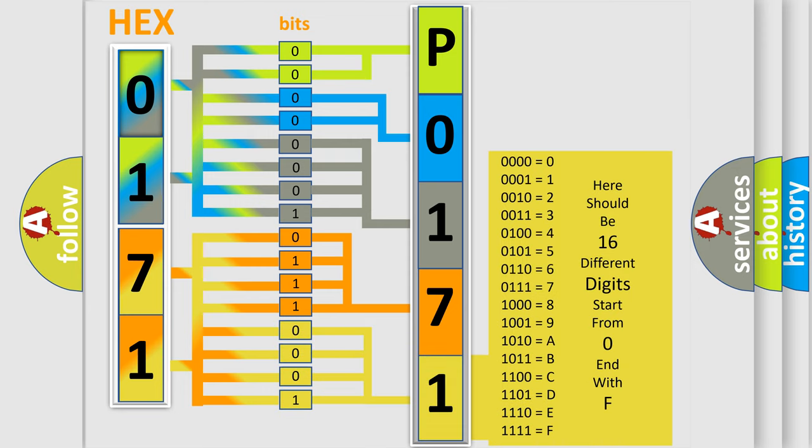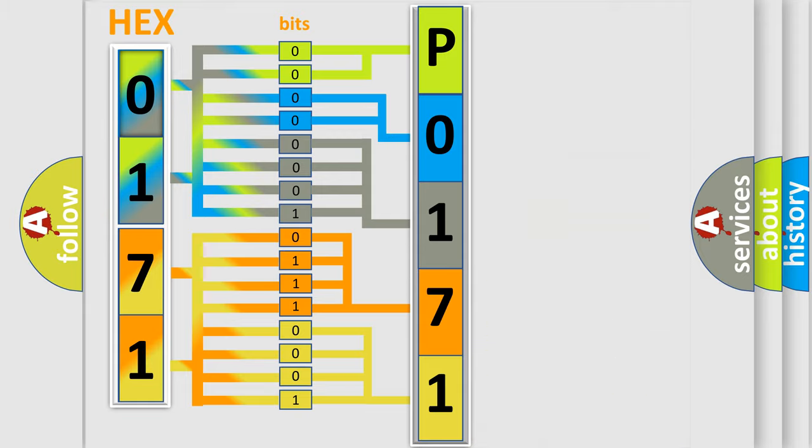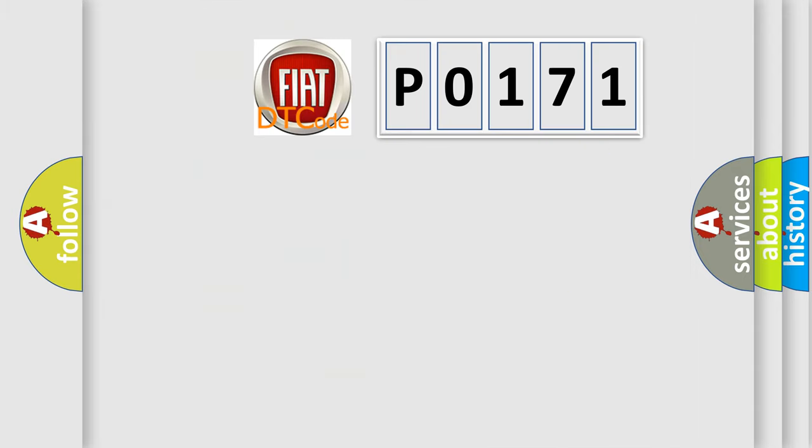We now know in what way the diagnostic tool translates the received information into a more comprehensible format. The number itself does not make sense to us if we cannot assign information about what it actually expresses. So, what does the diagnostic trouble code P0171 interpret specifically?